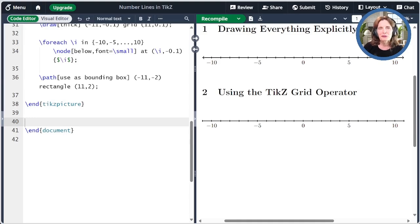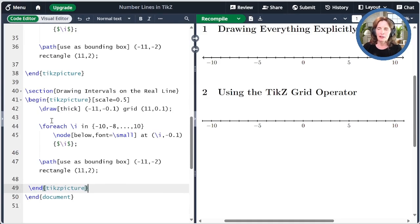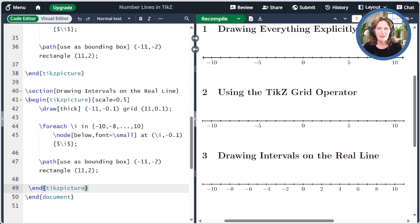Finally, we can use the number line to display intervals. Let me paste some code here that draws a grid like we had before. Just for fun, I'm labeling every second tick rather than every fifth one.